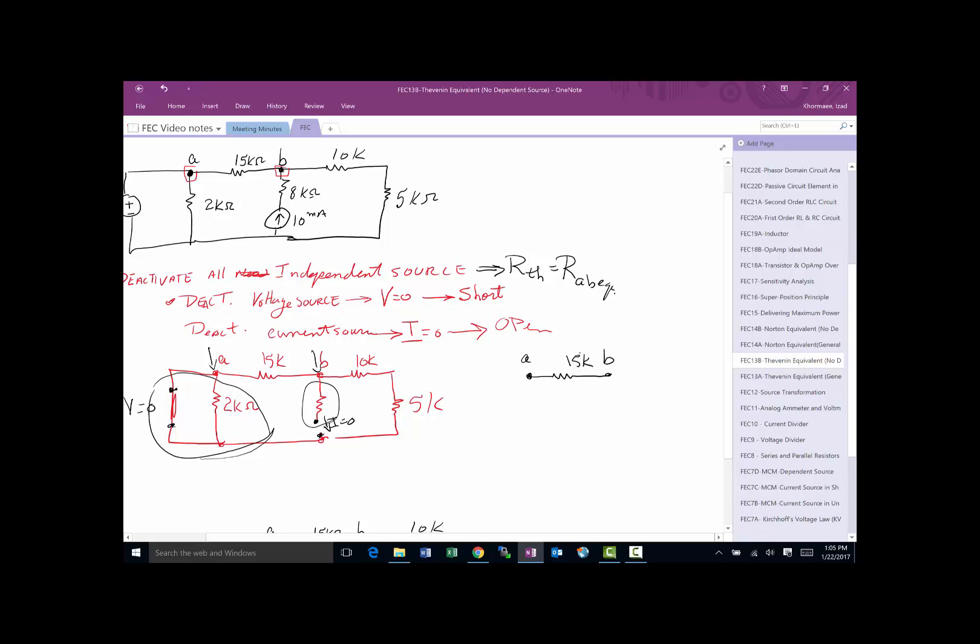understanding whether this 15K is in series with these 10 and 5K is one of the more complicated ones. Remember, we're looking at point A and B. That's the two points we're looking at, which means 10 and 5 is going to sit like this.